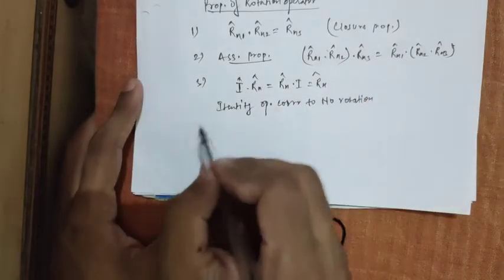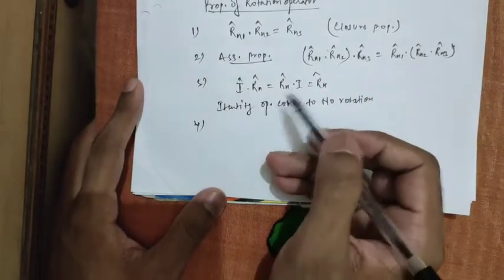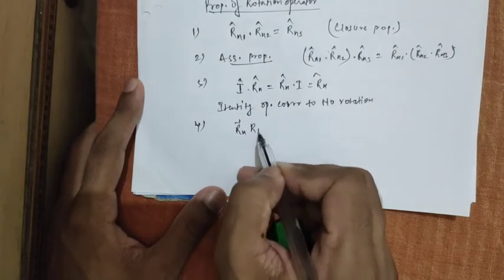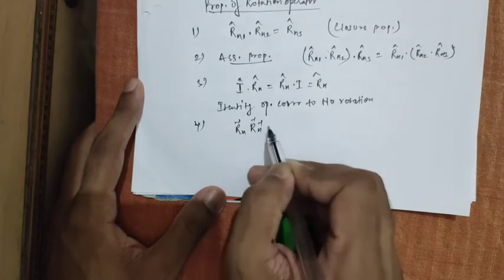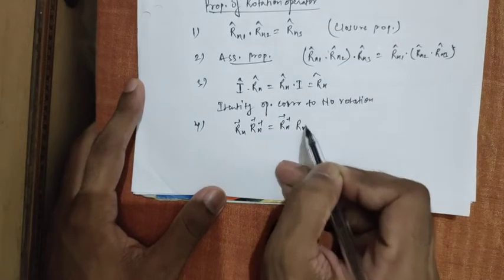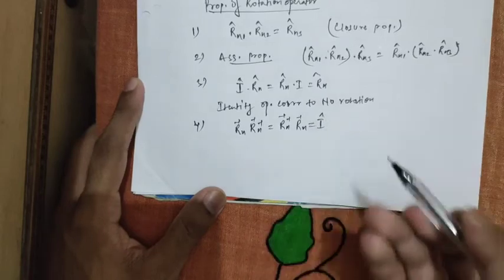Last property which is the property of inverse, that for every rotation operator there exists inverse rotation operator Rn inverse and this is equals to identity operator.